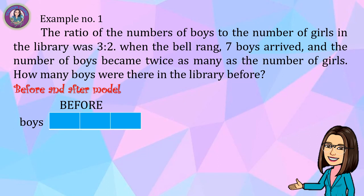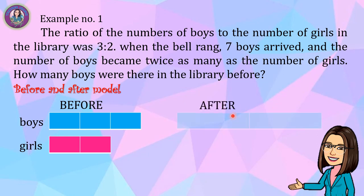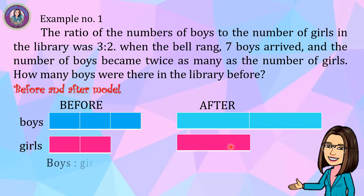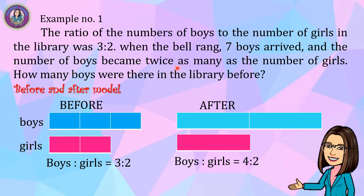The model shows the number of boys and the number of girls before and after. Before, the ratio of boys to girls is 3 to 2. After, the ratio of boys to girls is 4 to 2. We get four because the number of boys became twice as many as the number of girls — since the number of girls is 2, twice of 2 is 4.